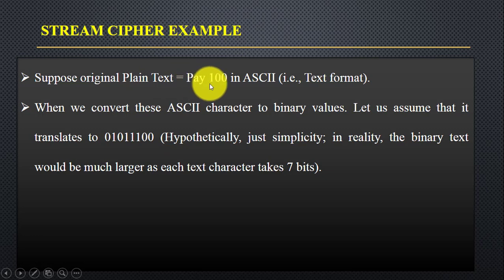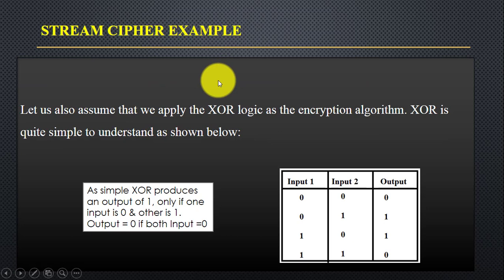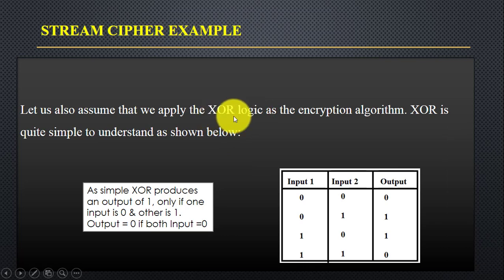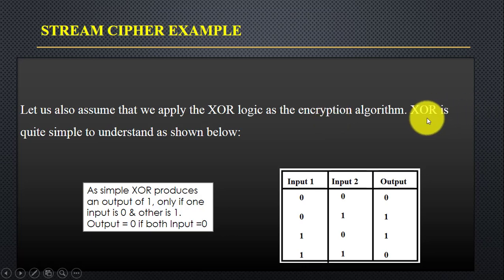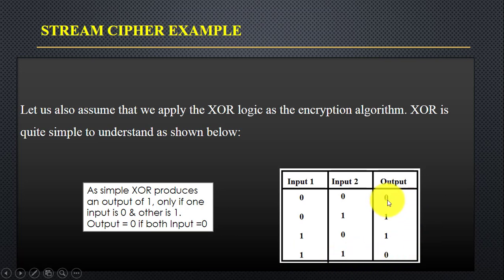So we have plain text P100 and that's the binary format we assumed. For encryption we are using XOR logic applied as the encryption algorithm. XOR is quite simple: when both inputs are 0 or both inputs are 1, the output is 0. When one input is 0 and the other is 1, the output is 1.